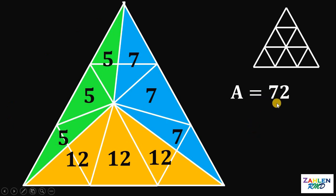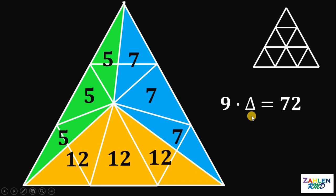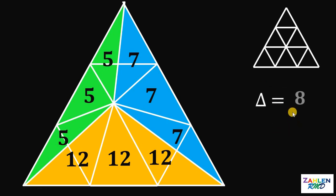Take note that this equilateral triangle is made up of 9 small equilateral triangles. Therefore, the area of one small equilateral triangle must be equal to 72 over 9, or simply equal to 8 square units.